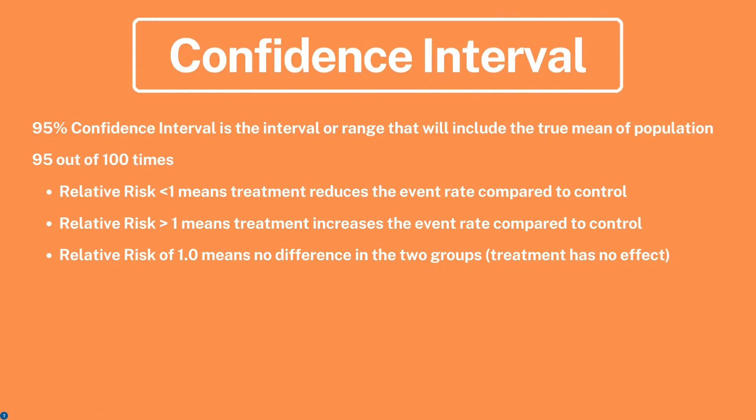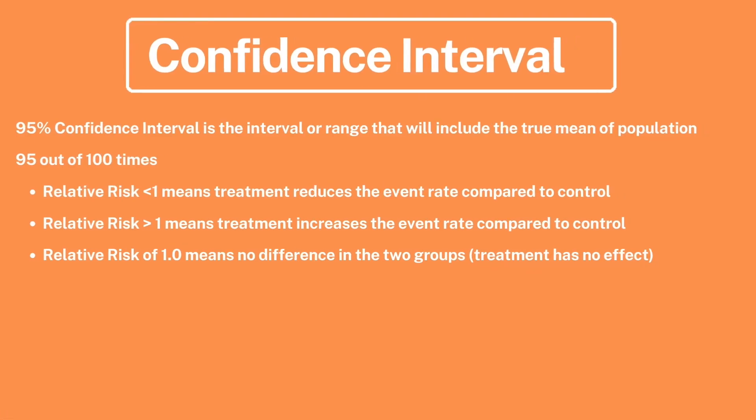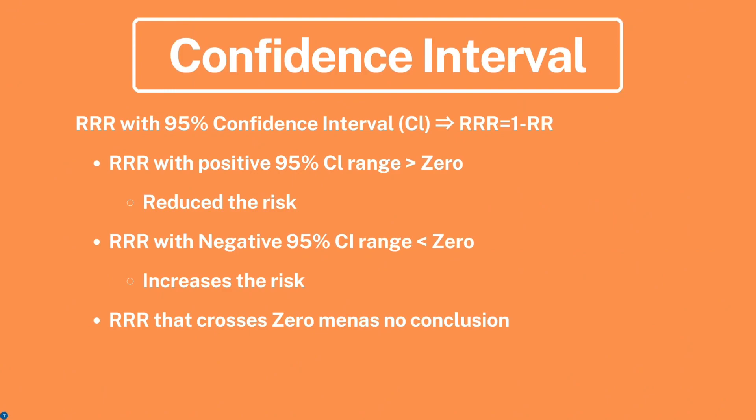A relative risk of less than one means treatment reduces the event rate compared to control. A relative risk of more than one means treatment increases the event rate compared to control. A relative risk of one means there is no difference between the two groups. The RRR calculation is: RRR equals one minus relative risk.